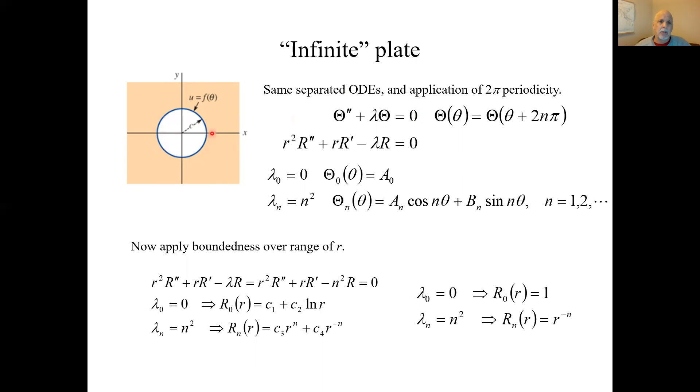What changes is the boundedness condition on R. In this case, R equals 0 is not included on the plate. This white part is not part of the plate. We do have to worry about out at infinity. As the radius goes out to infinity, it can't blow up.